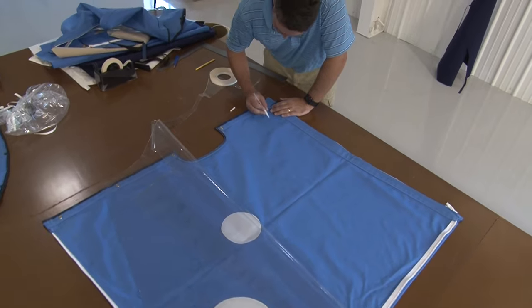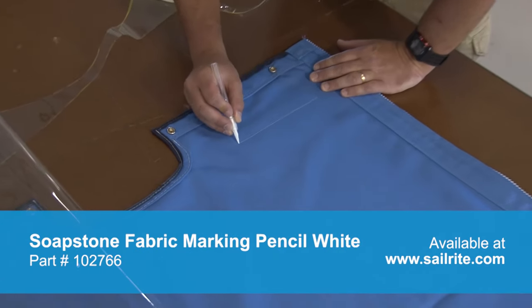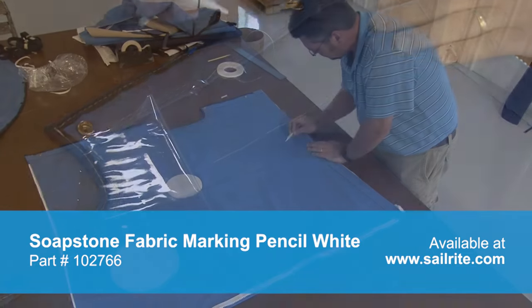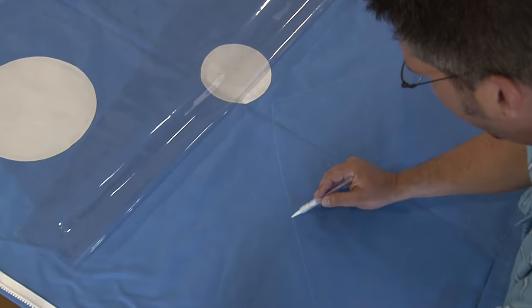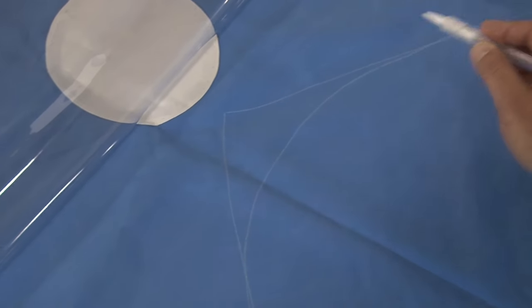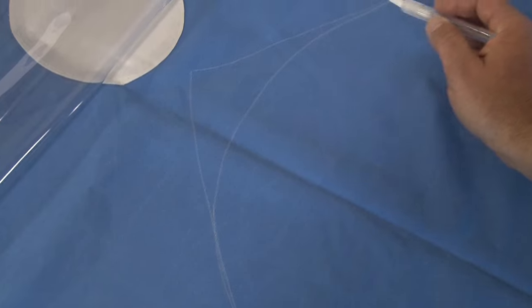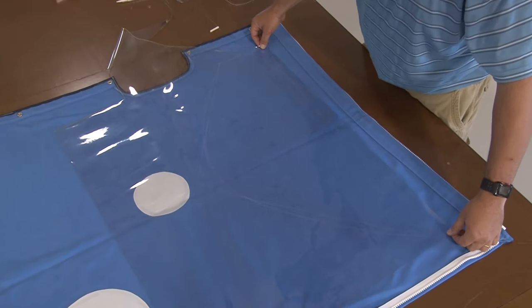We are using the soapstone pencil to mark on the Sunbrella canvas where the window will be installed. That soapstone pencil is great because you can apply marks and they easily come up with water. If you would like a curve, make sure it is a gradual curve because we will be installing binding. Binding likes gradual curves but not really sharp curves. If you have a 90 degree angle, you will need to cut the binding.